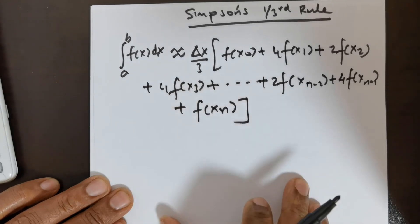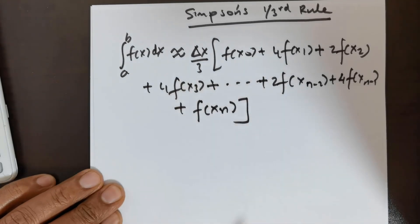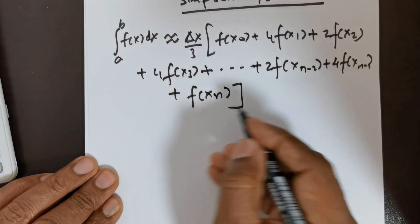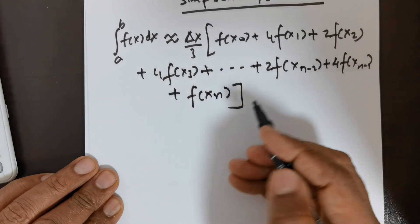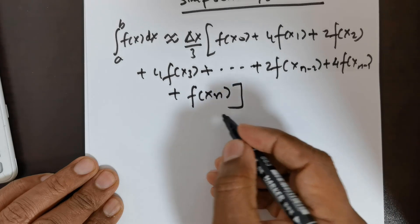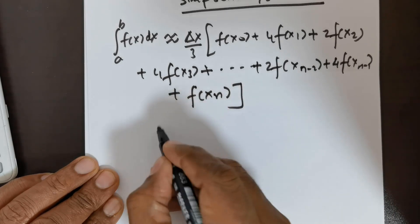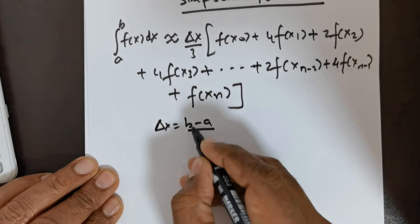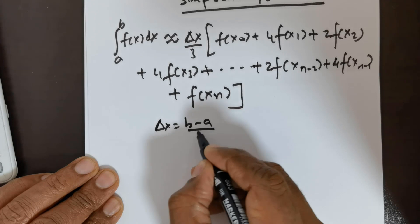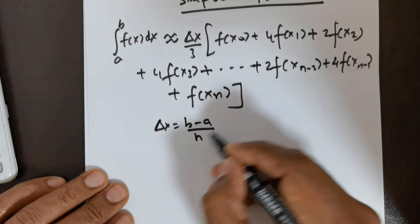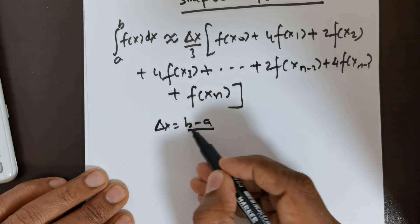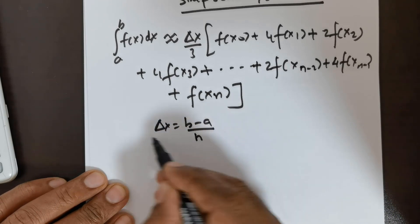This is the most powerful numerical integration technique, called Simpson's rule. It has other variations, but we will use this one. In this case, delta x has the formula: b minus a divided by n, where n is the number of divisions of the interval.